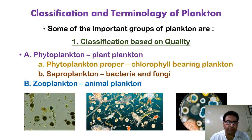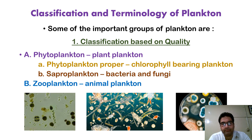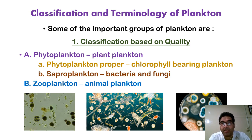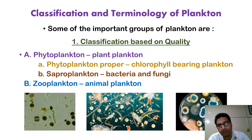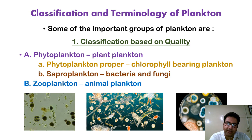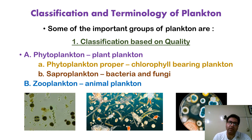Coming on to the classification and terminology — how we term different kinds of planktons and what is the basis of the classification. Based on quality, they can be categorized as phytoplankton if they are from the plant origin, and zooplankton if they are from the animal origin. Phytoplanktons are further categorized into phytoplankton proper — those plants which bear chlorophyll — whereas saproplankton includes bacteria and fungi categorized in this group.